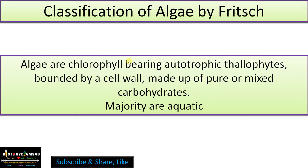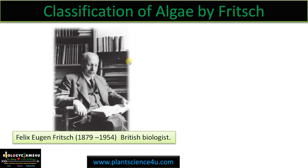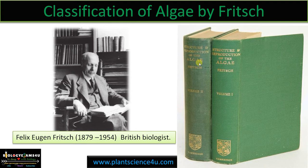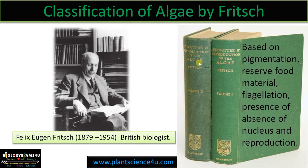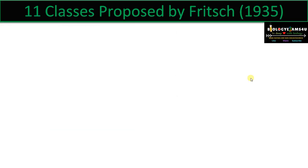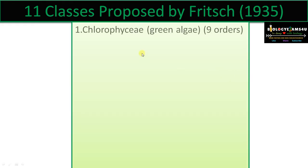Algae are chlorophyll-bearing autotrophic thallophytes with a cell wall made up of pure or mixed carbohydrates. They are primarily aquatic. The most comprehensive and massive classification was proposed by Felix Eugene Fritsch, a British biologist, in his book 'Structure and Reproduction of Algae' in two volumes. The criteria for this classification were based on pigmentation, reserve food material, flagellation, presence or absence of nucleus (eukaryotic or prokaryotic), and the reproductive nature of different groups.